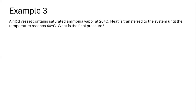Example number three reads as follows: a rigid vessel contains saturated ammonia vapor at 20 degrees Celsius. Heat is transferred to the system until the temperature reaches 40 degrees Celsius. What is the final pressure? So here we have two states — state number one and state number two.